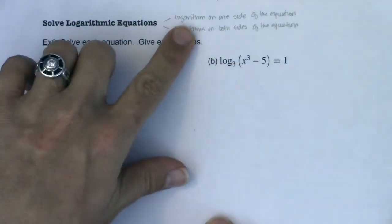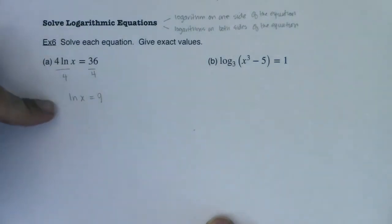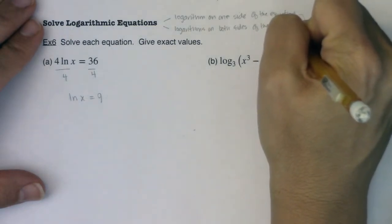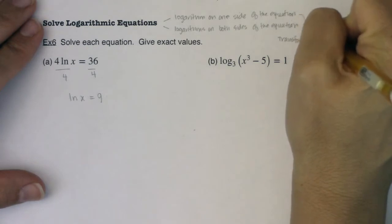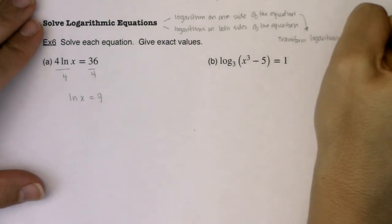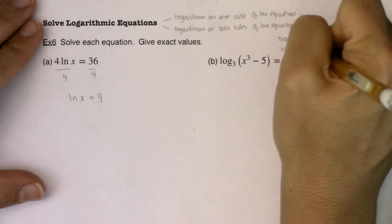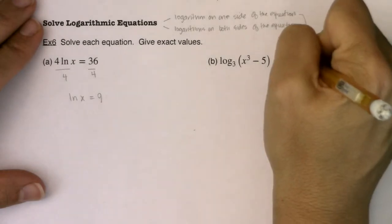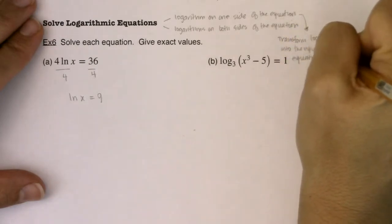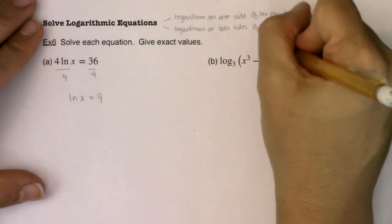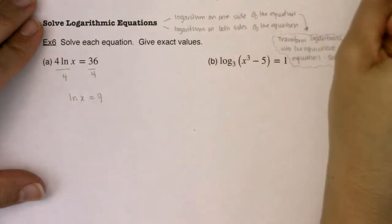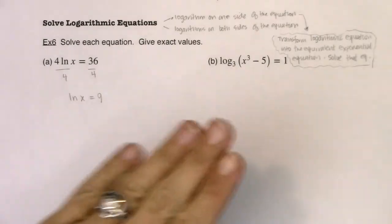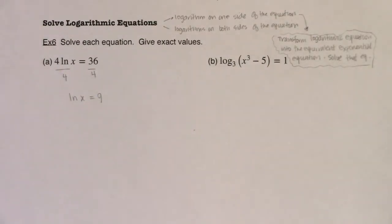The technique when you have a logarithm on one side of the equation is to transform your logarithmic equation into the equivalent exponential equation and then solve that equation. So: isolate the logarithmic expression first and foremost — if it comes already isolated, great; if not, isolate it. Then transform it into the equivalent exponential equation.